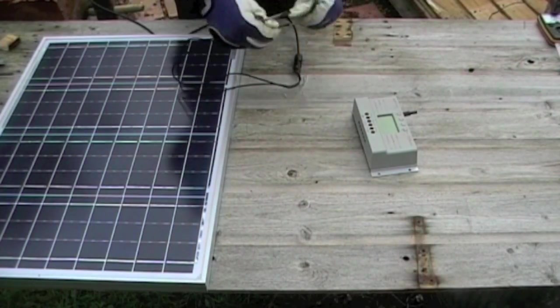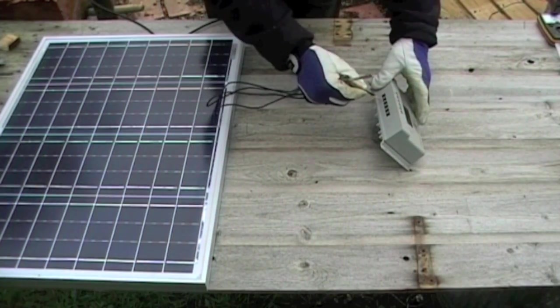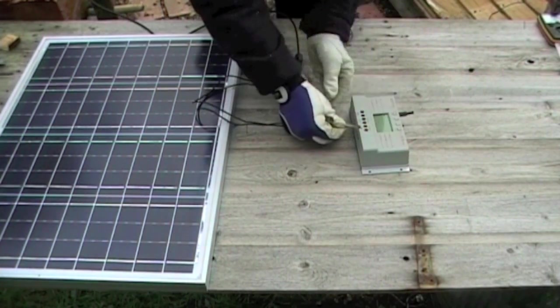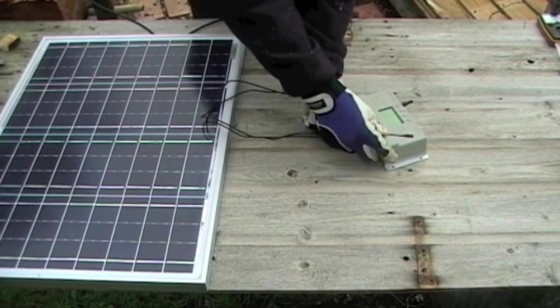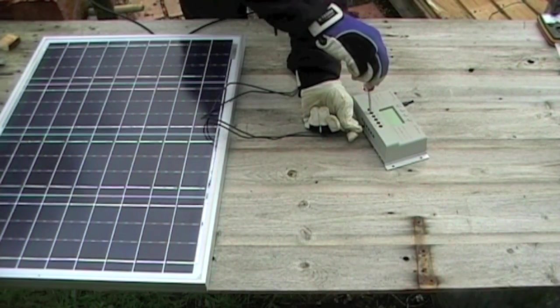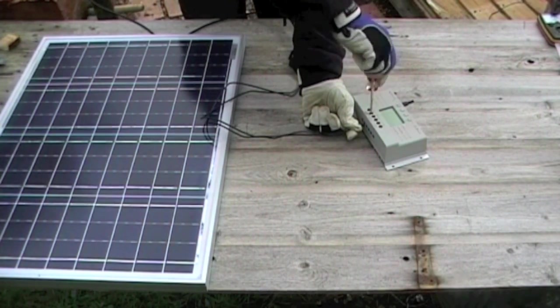So first off, I'll connect up my solar panel using the extension wires I've just made. As ever, the black wire negative to the negative connector of the charge controller.